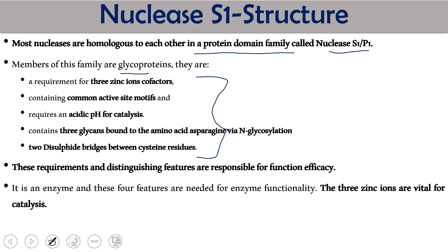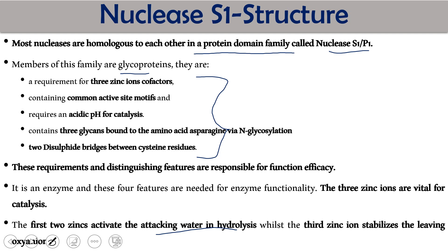These requirements and distinguishing features are responsible for their functional efficacy. These four features are needed for enzyme functionality. The three zinc ions are vital for their catalysis and catalytic processes. The first two zinc activate the attacking water in hydrolysis while the third zinc stabilizes the leaving oxygenation.